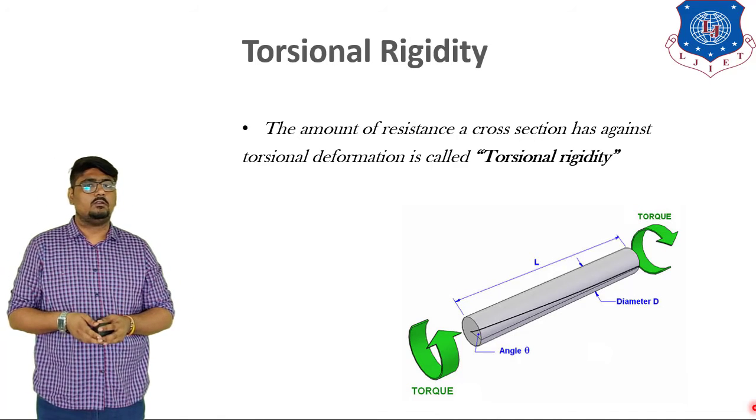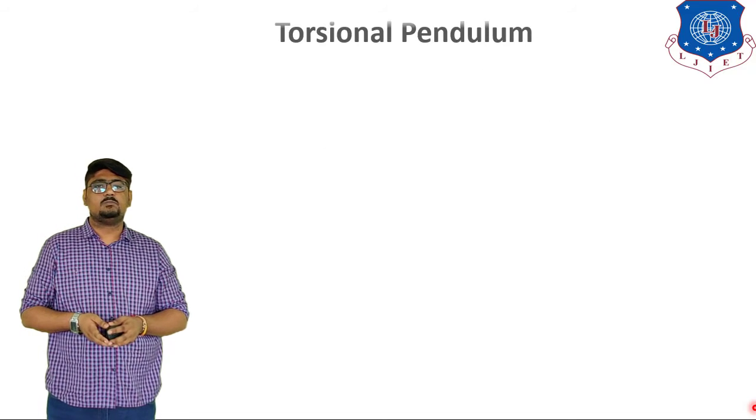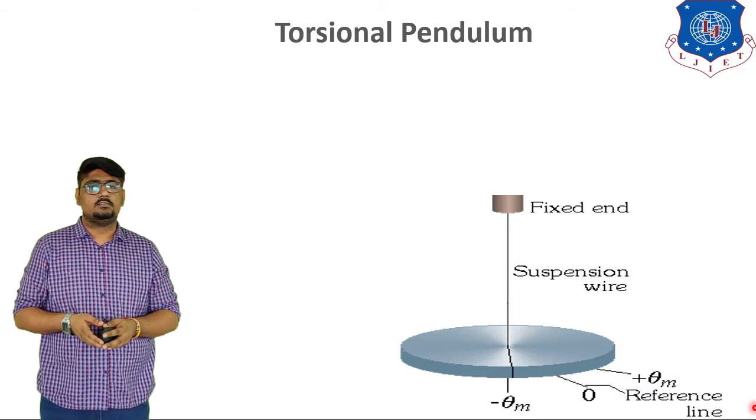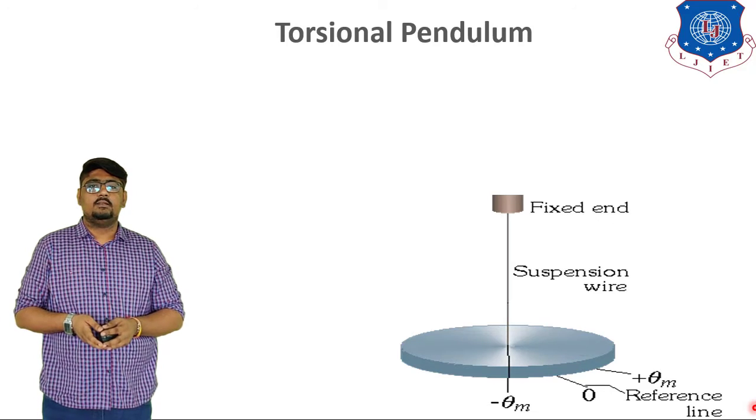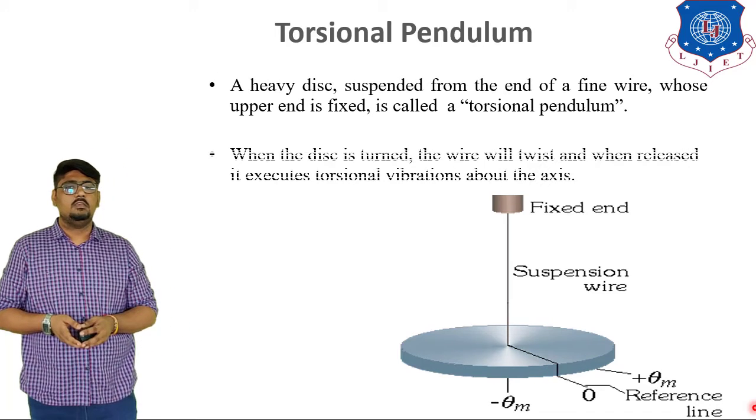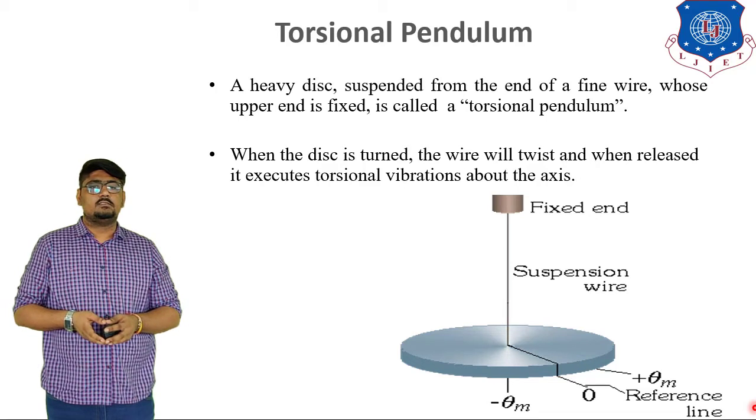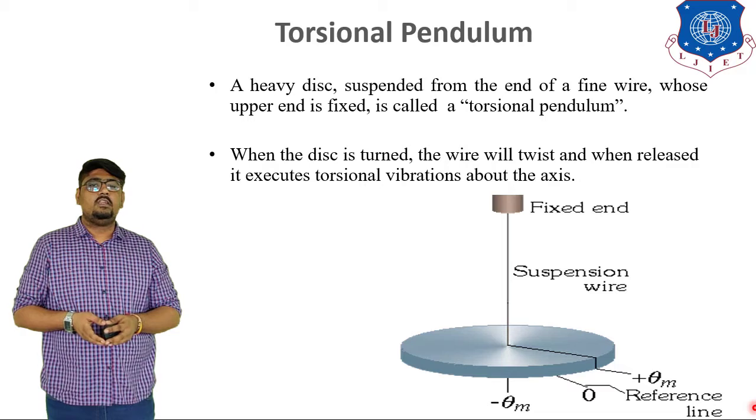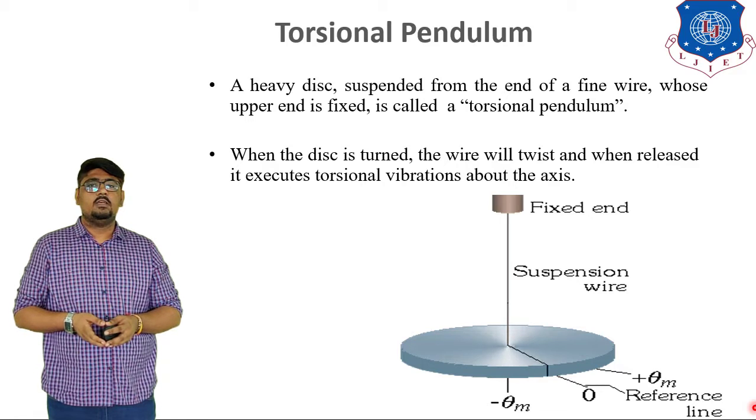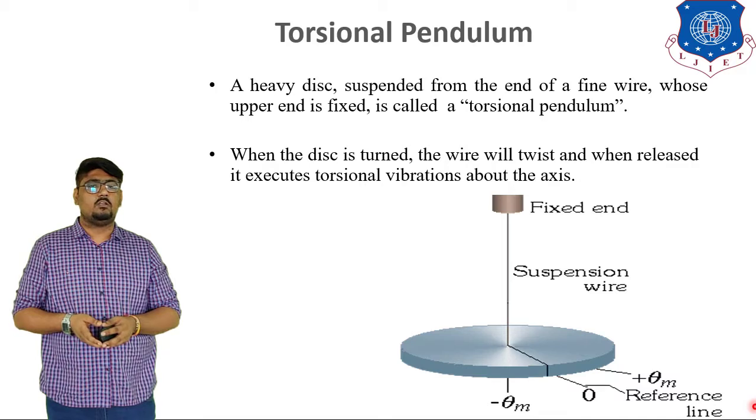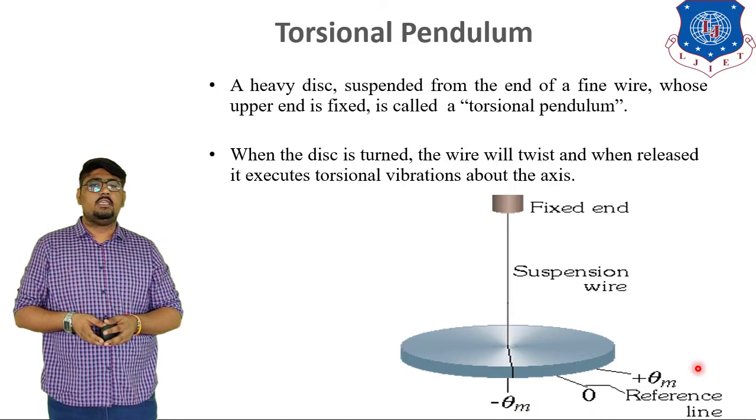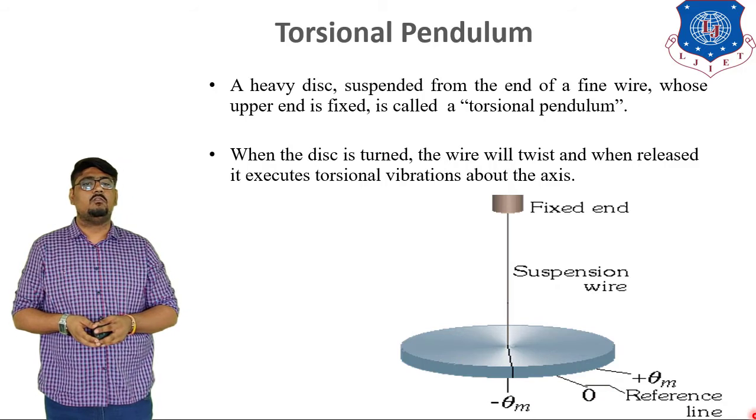Let us discuss about a torsional pendulum first. A heavy disc is suspended from one end of fine wire whose upper end is fixed is known as a torsional pendulum. When the disc is turned about the axis of the wire, the wire exerts a torque on the mass of the disc, tending to rotate it back to its original position. If the twist is made and released, the mass will oscillate back and forth and demonstrate simple harmonic motion. This is the angular version of the bouncing mass hanging from the spring.